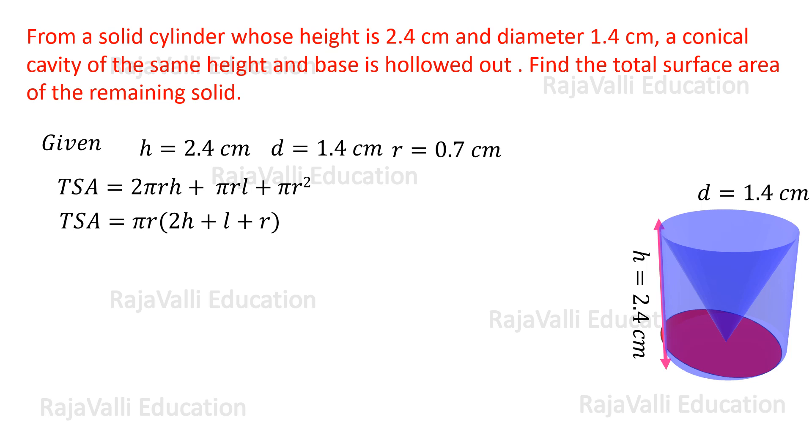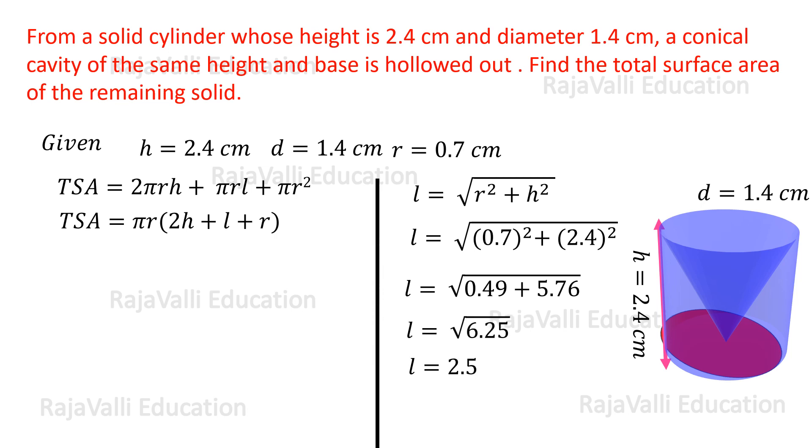Here l is not given, that is, slant height of the cone. We can find out slant height using the formula l = √(r² + h²). By substituting these values and simplifying, we get l = 2.5 cm.